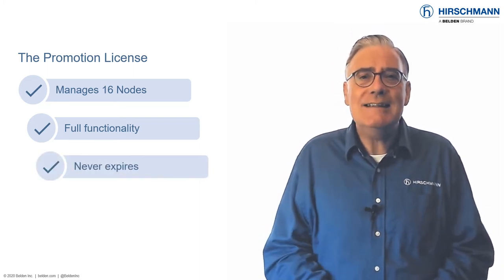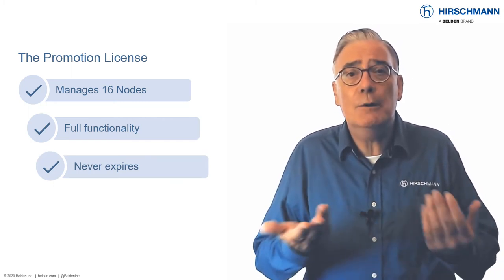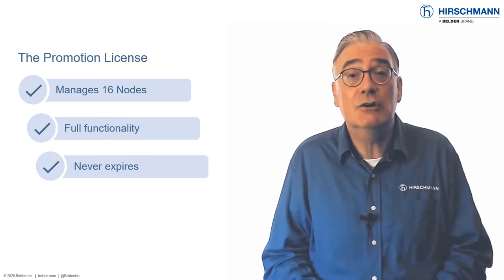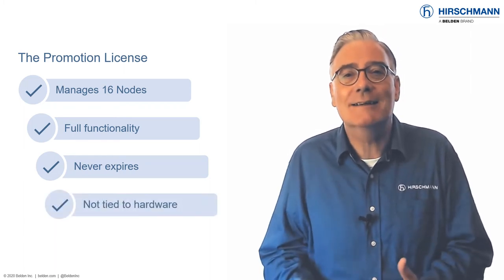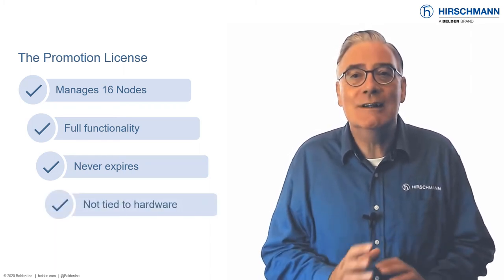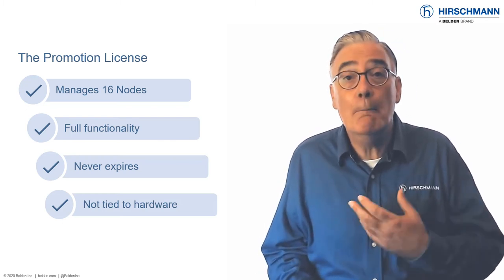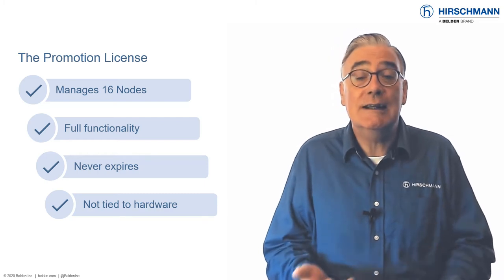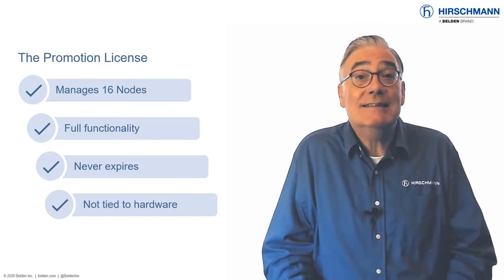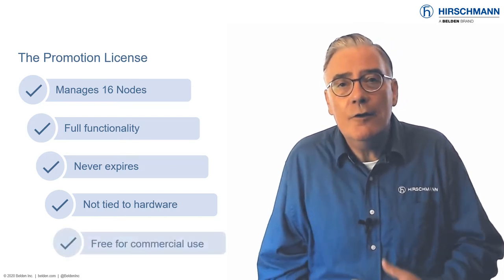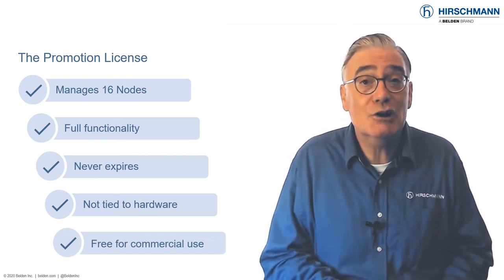The license never expires. If you later decide to move up to a newer version of Industrial HiVision, just download a new license key. Even better, the license is not tied to hardware. The same license can be used for multiple installations. Use it at work and at home. Distribute it to your friends and colleagues. Feel free to use the license for personal or commercial use.